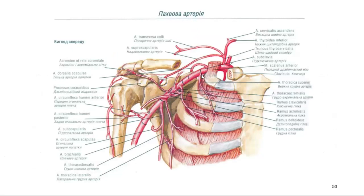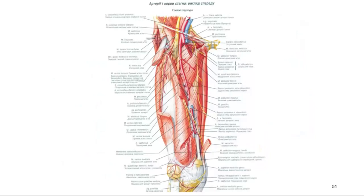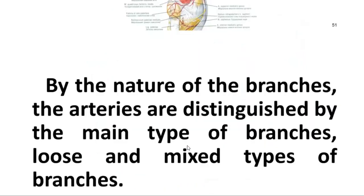In arteries of the musculo-elastic type, there are almost equal numbers of muscle cells and elastic fibers in the middle membrane — for example, the subclavian and femoral arteries. The subclavian artery has three parts with different structure in different cavities, connecting with the scalenus muscle. The femoral artery passes through the canalis adductorius and becomes the popliteal artery in the lower limb.